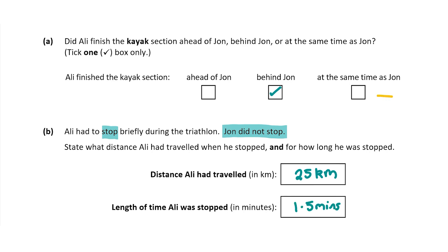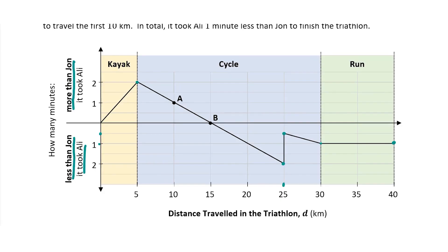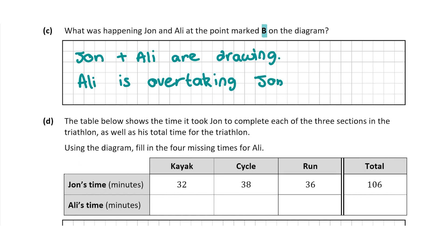For getting the correct answers to sections A and B you'll get a total of 10 marks. Now question C asks what was happening to John and Ali at the point marked B on the diagram. Before point B, it had taken Ali more time than John. At point B, it is taking them the exact same time. After point B, Ali is taking less time than John. So at point B, John and Ali are drawing, and Ali is overtaking John. For this question you get a total of 10 marks.